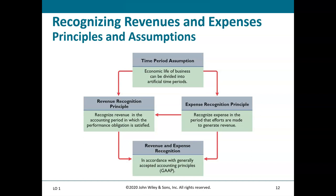To summarize graphically: the time period assumption divides the economic life of a business into artificial time periods. The revenue recognition principle says recognize revenue when the performance obligation is satisfied. The expense recognition principle says recognize expense in the period efforts are made, tied to the revenues. Both are done in accordance with GAAP.